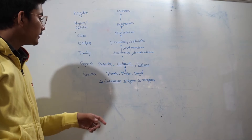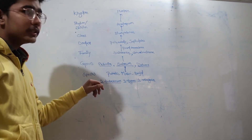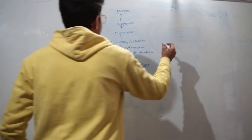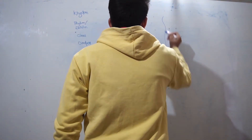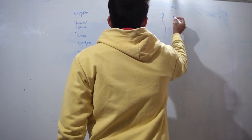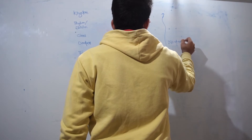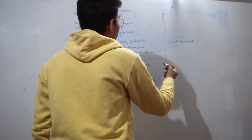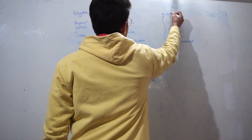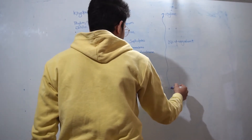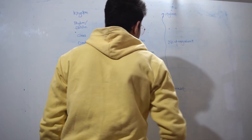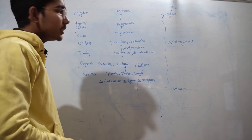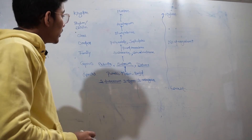The number of organisms is increasing as we move upward through the hierarchy, which is why kingdom is the highest category and species is the lowest category. But the number of common characters is decreasing as we move upward.